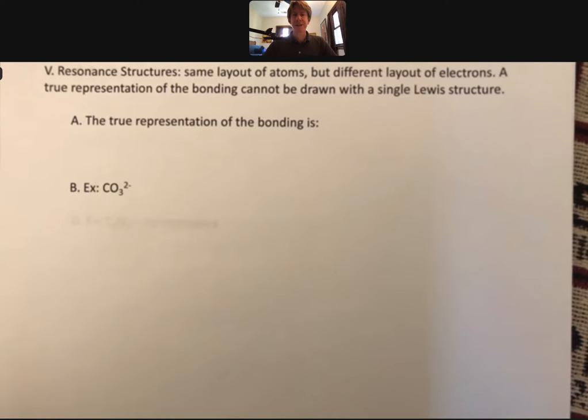We're not going to spend a lot of time on resonant structures, but I do want you to know what they are. They're the same layout of atoms, but different layout of electrons. A true representation of the bonding cannot be drawn with a single Lewis structure, and so we must draw more than one Lewis structure to represent the bonding.